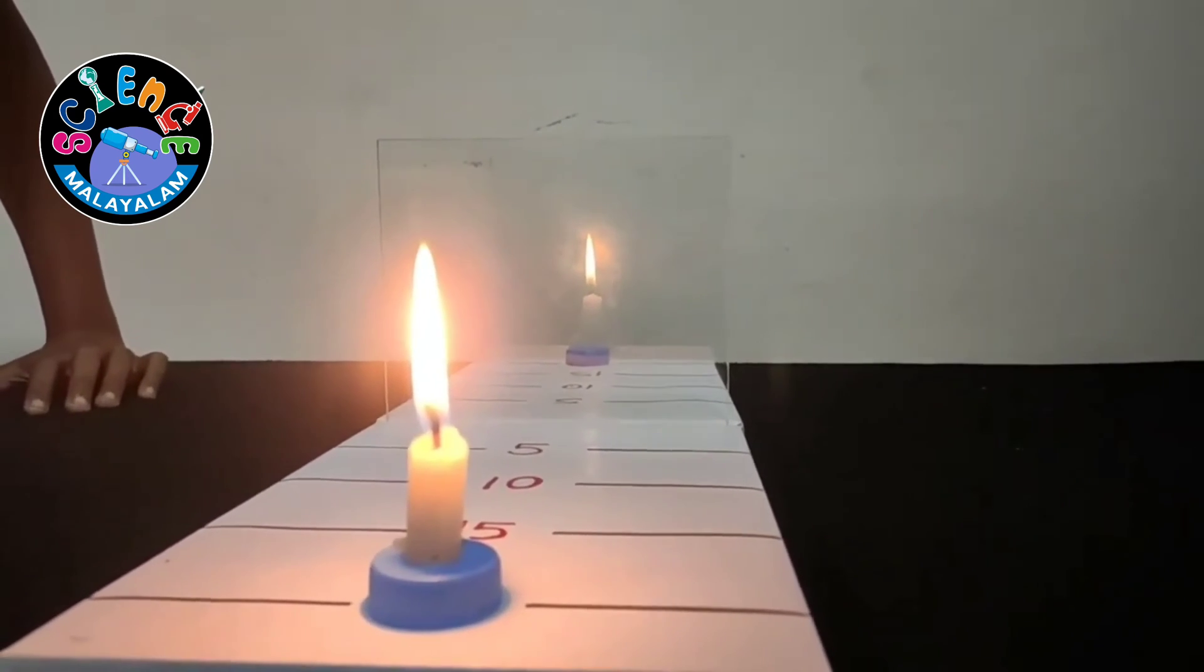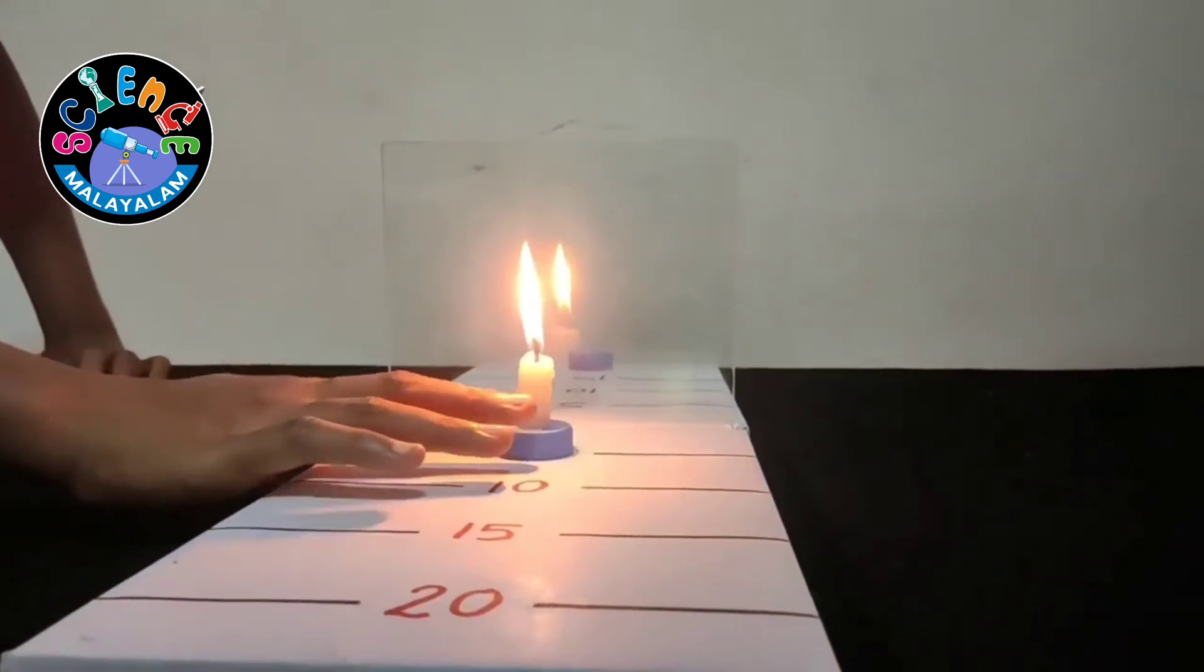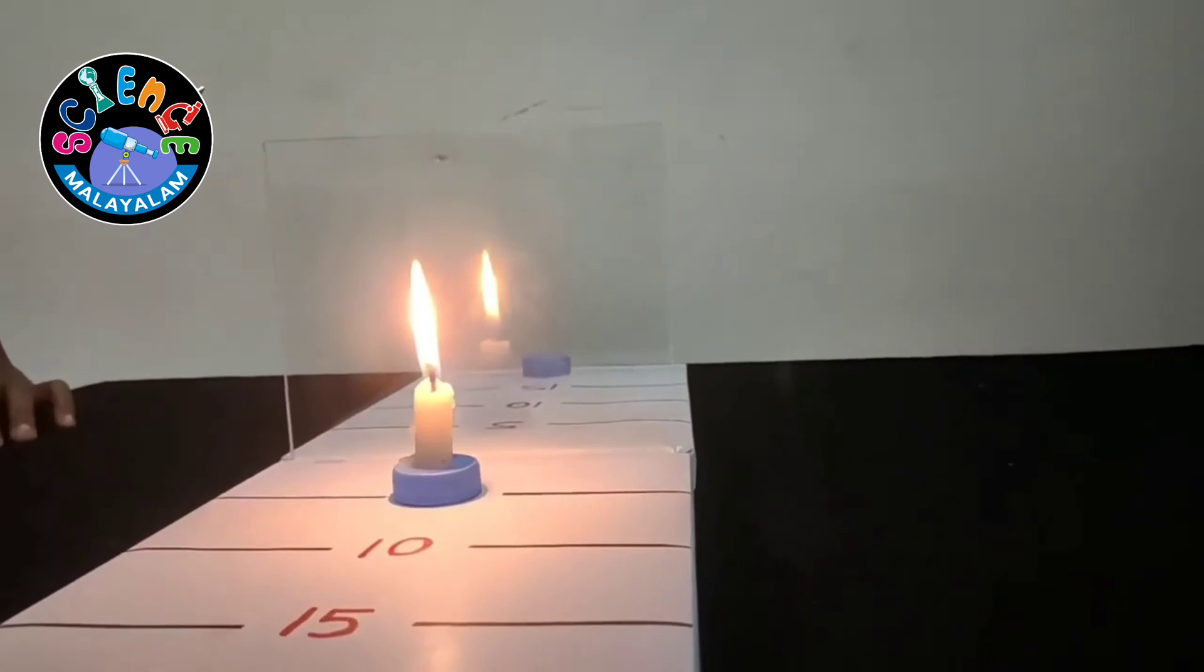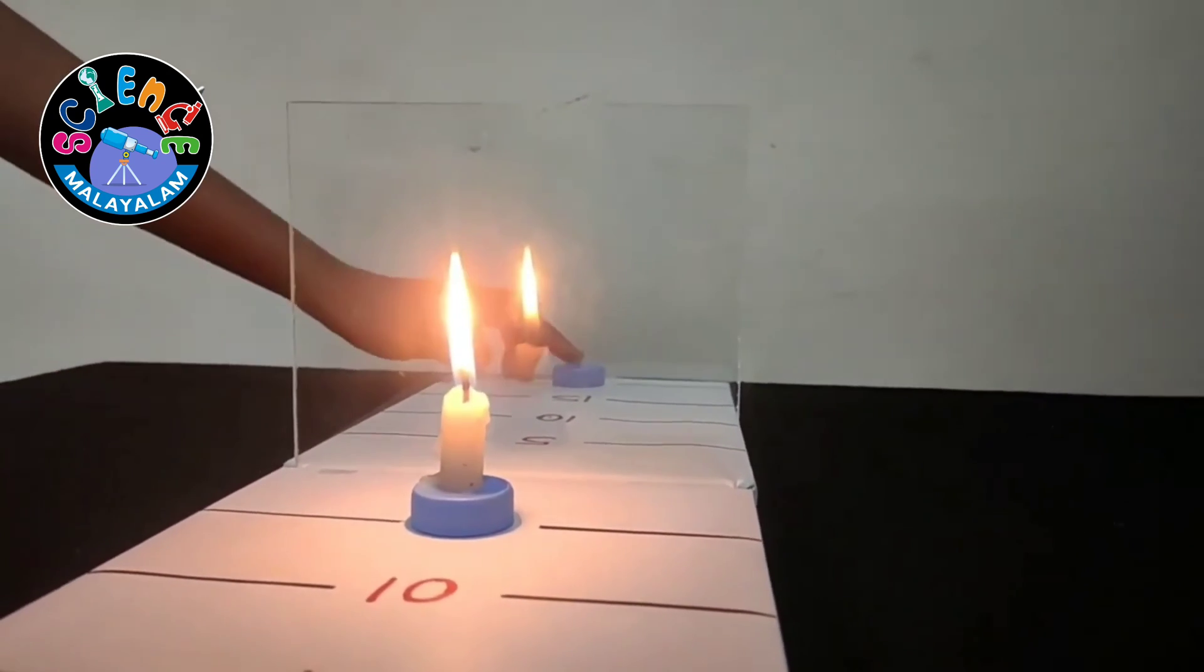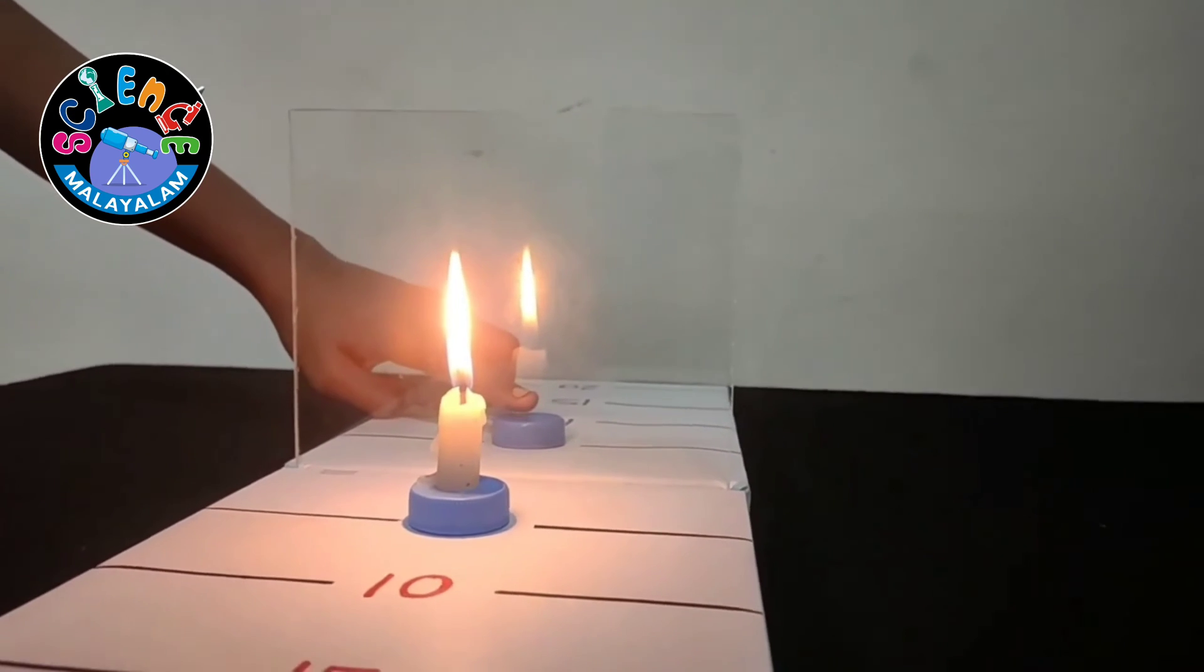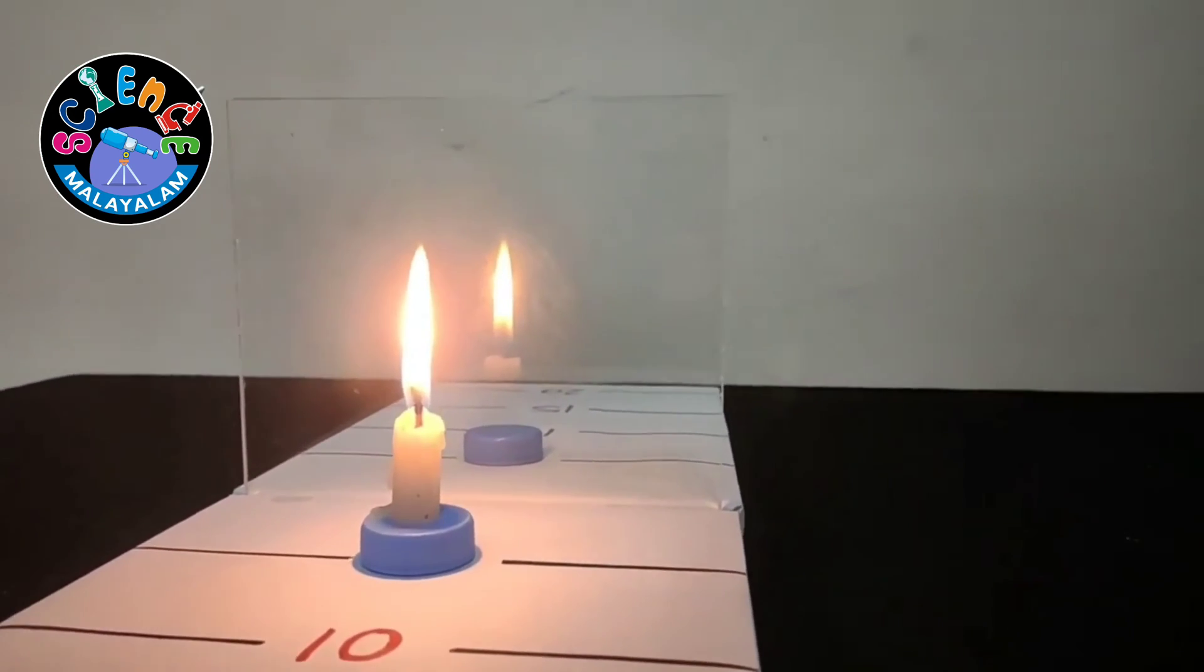Now we are moving the candle to 5 cm. We can observe the image formed here. So let's move the cap. We can clearly measure that the image is formed at 5 cm.